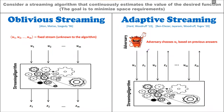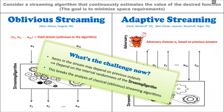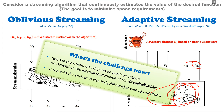The difficulty is that the choice of elements in the stream now depends on the estimations we give out. As a result, the inputs in the stream depend on the internal randomness of our streaming algorithm, and that's a problem.